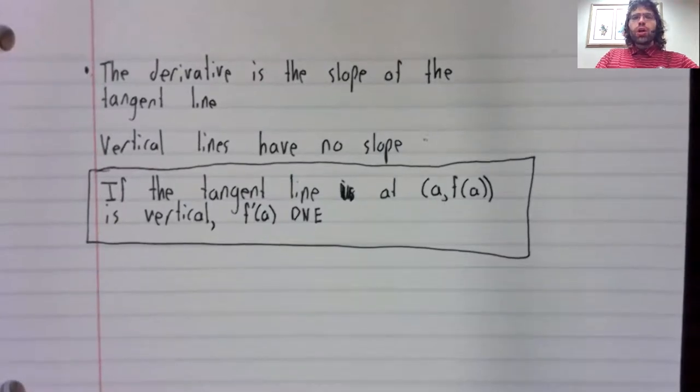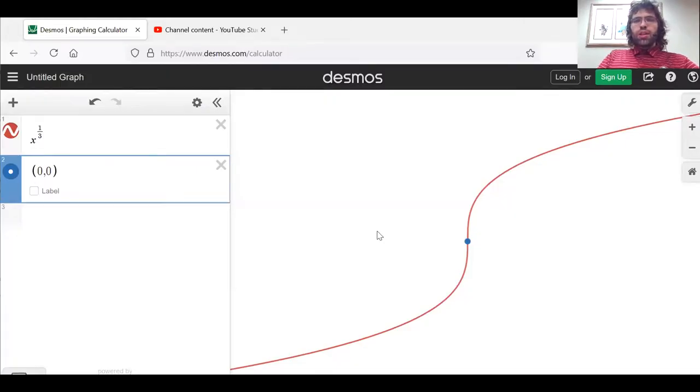And there are common functions where this situation shows up. Probably the easiest example to give is the cube root function at the origin, (0, 0).